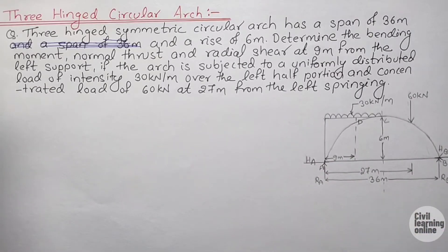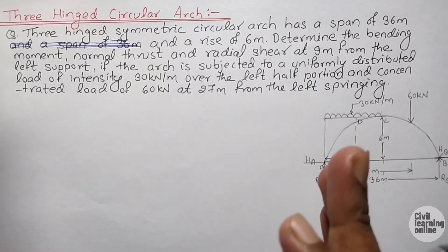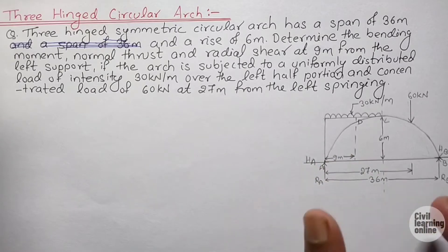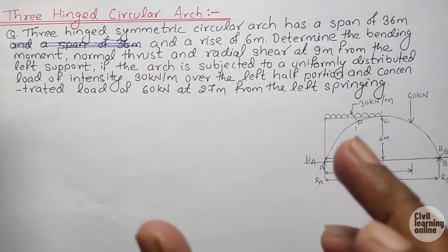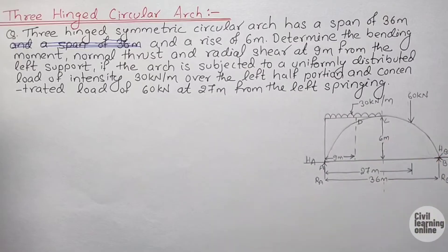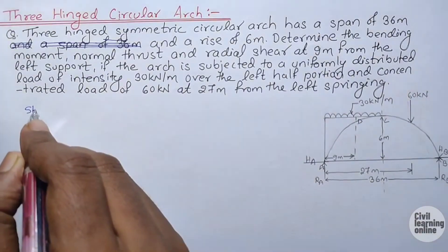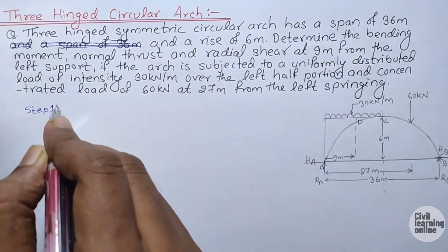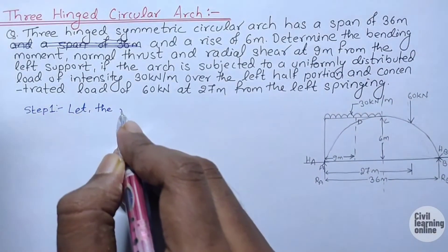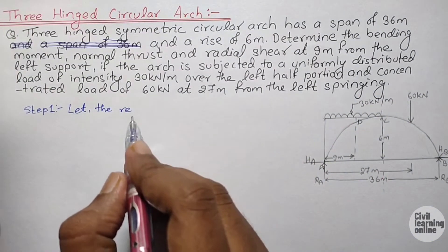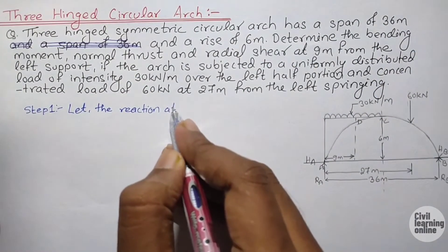In Step 1, we find the reactions at the supports. This step is similar to what we do when analyzing a beam, whether simply supported or cantilever. Let us assume the reaction at support A equals RA and the reaction at support B equals RB.